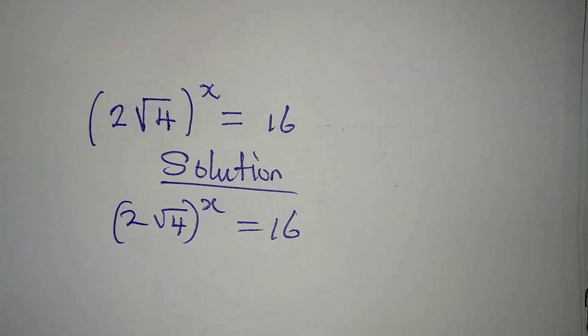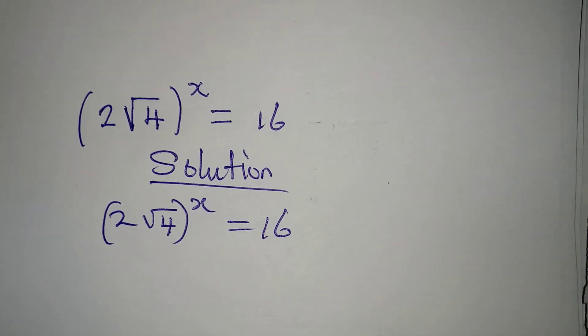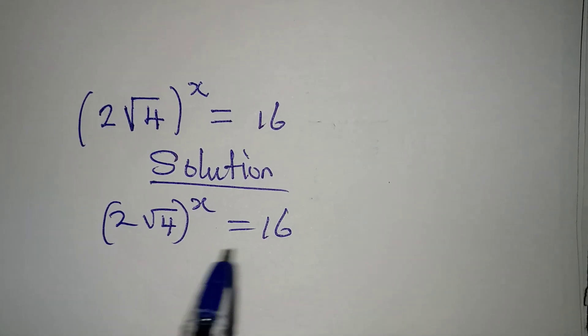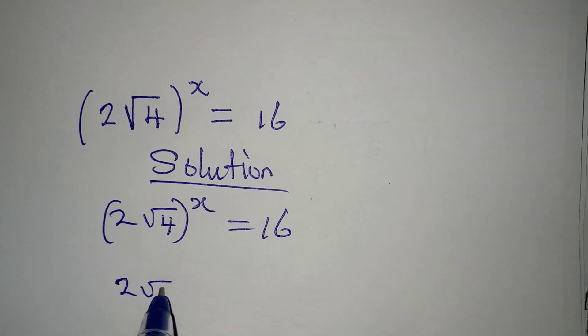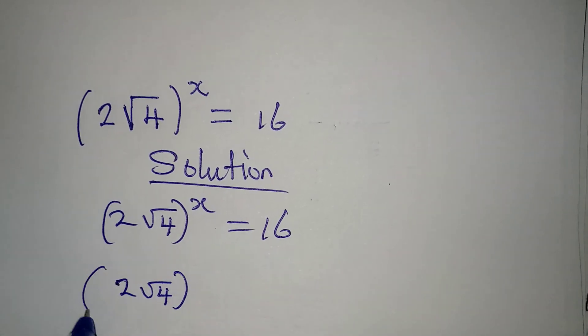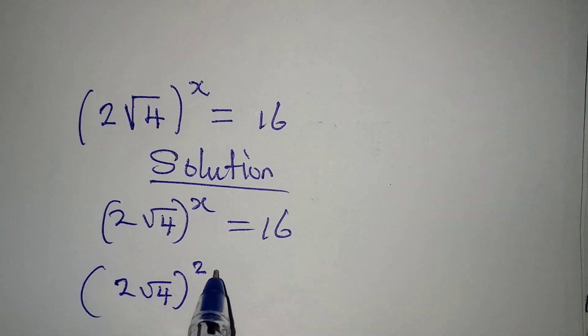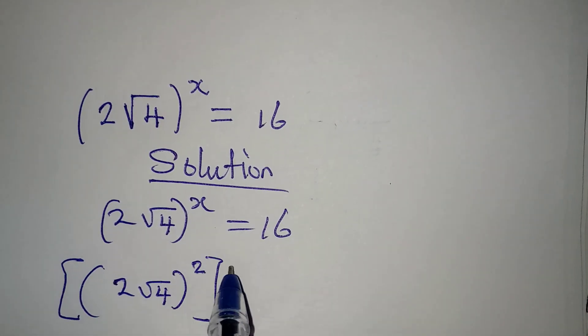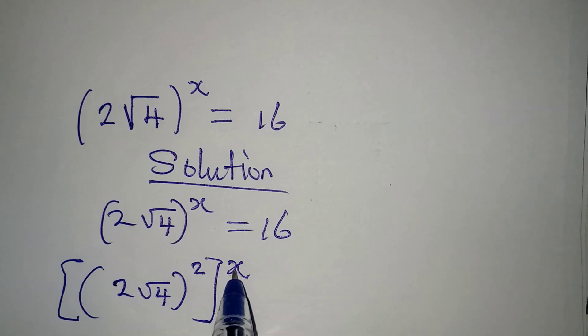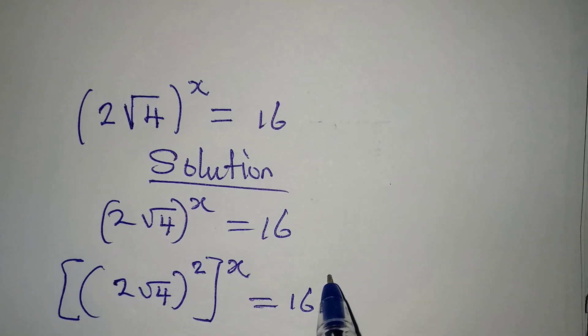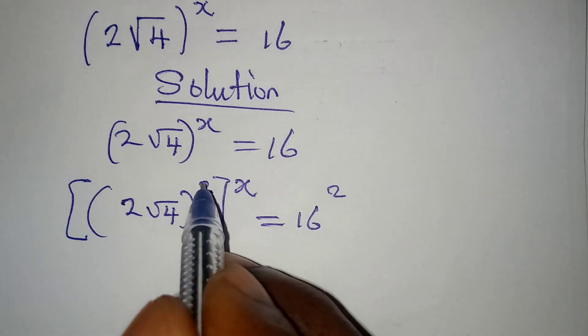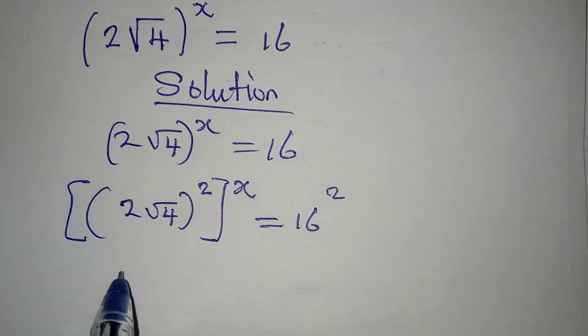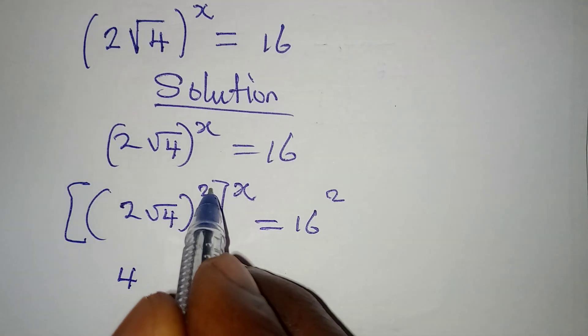Let's do this in two ways. For the first method, let's square both sides so that we have (2√4)^x. When we square this, the exponent has to come here. This will be equal to 16 squared. From here, this will take this as its power so we have 4.